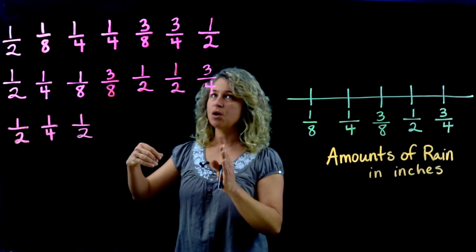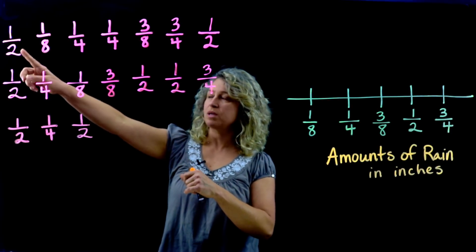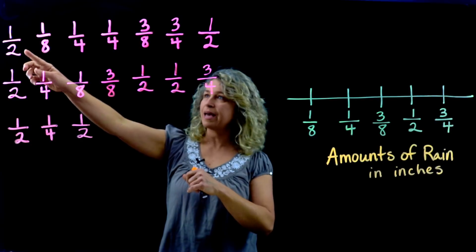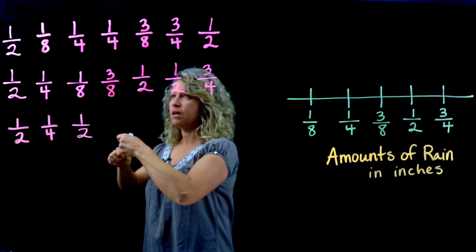First of all, we're going to put this onto the line plot. We can start with any particular fraction that we want. The first one is halves, so let's count how many halves there are.